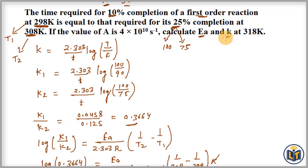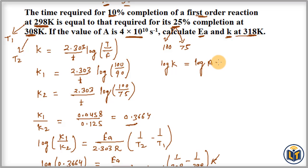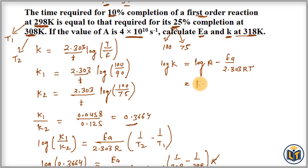In the second part of the question, we find the rate constant at 318 K. We apply the Arrhenius equation in the form: log K = log A − Ea / (2.303RT). The pre-exponential factor A = 4.0 × 10¹⁰ is given.